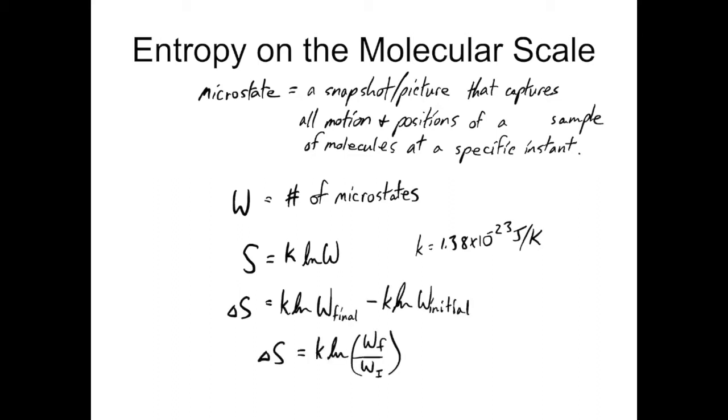So we can end up with an expression, delta S, the change in entropy is equal to k ln number of microstates final divided by number of microstates initial. And in general, entropy is going to increase with the number of microstates available. So the number of microstates and therefore the total entropy tends to increase with increasing temperature, increasing volume, and increasing the number of independently moving molecules.